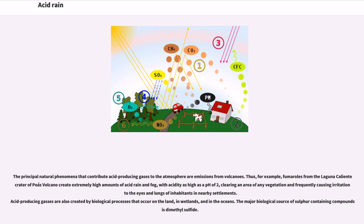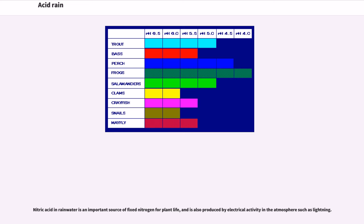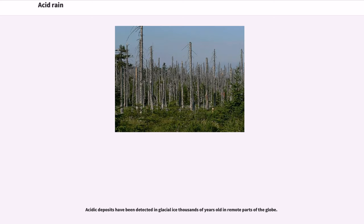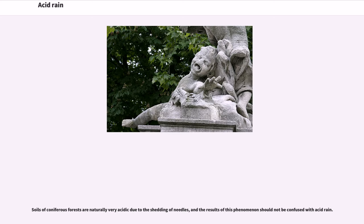Acid-producing gases are also created by biological processes that occur on the land, in wetlands, and in the oceans. The major biological source of sulfur-containing compounds is dimethyl sulfide. Nitric acid in rainwater is an important source of fixed nitrogen for plant life, and is also produced by electrical activity in the atmosphere such as lightning. Acidic deposits have been detected in glacial ice thousands of years old in remote parts of the globe. Soils of coniferous forests are naturally very acidic due to the shedding of needles, and the results of this phenomenon should not be confused with acid rain.